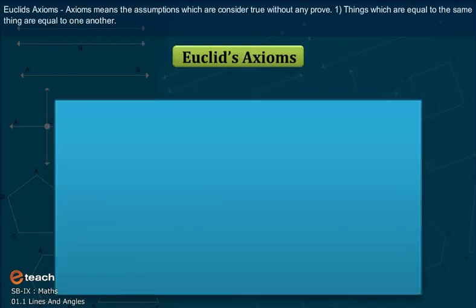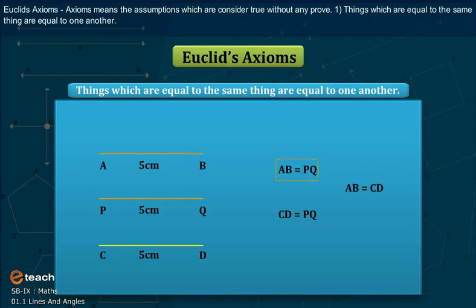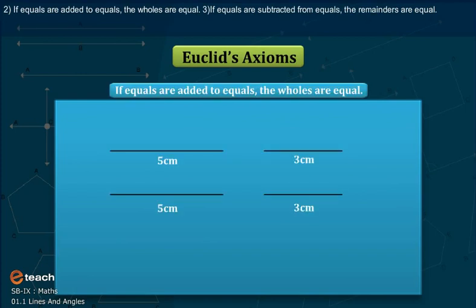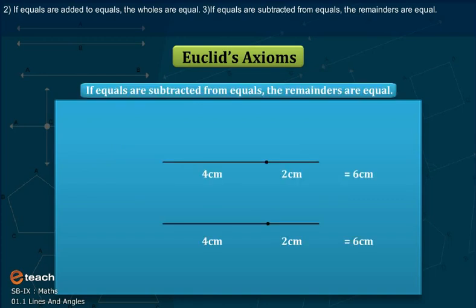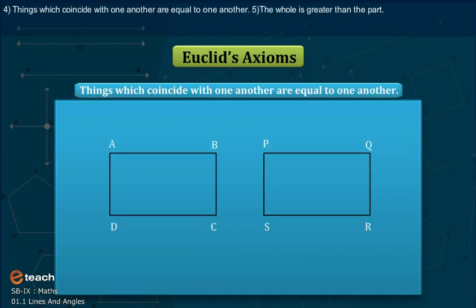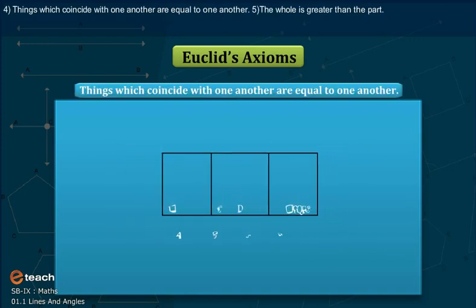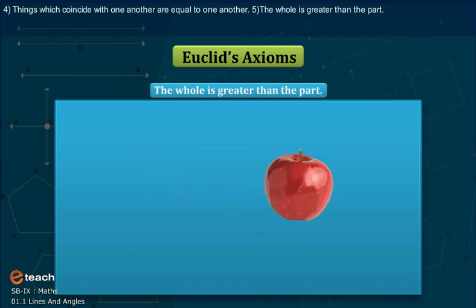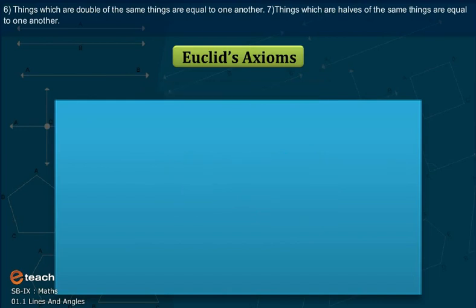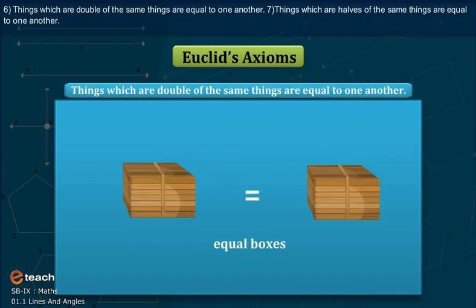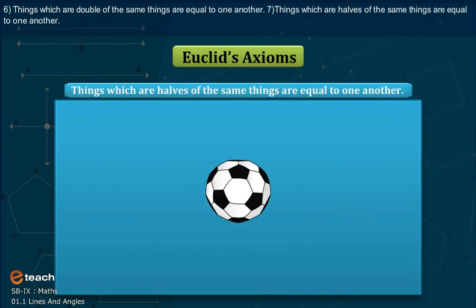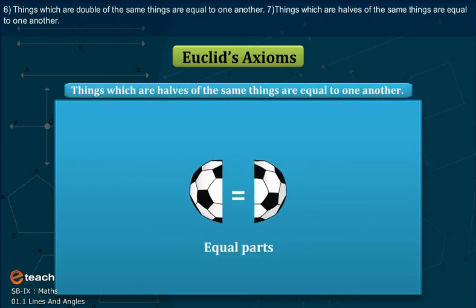Euclid's Axioms are assumptions which are considered true without any proof. 1. Things which are equal to the same thing are equal to one another. 2. If equals are added to equals, the wholes are also equal. 3. If equals are subtracted from equals, the remainders are equal. 4. Things which coincide with one another are equal to one another. 5. The whole is greater than the part. 6. Things which are double of the same things are equal to one another. 7. Things which are halves of the same things are equal to one another.